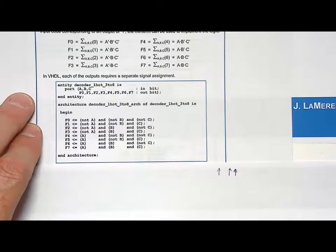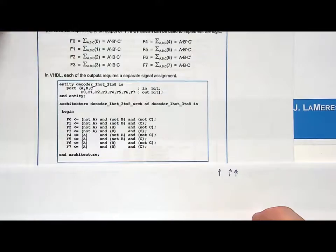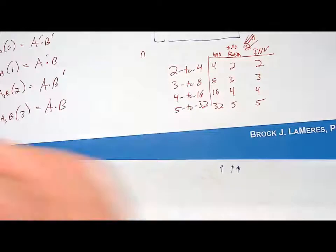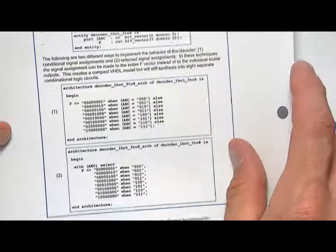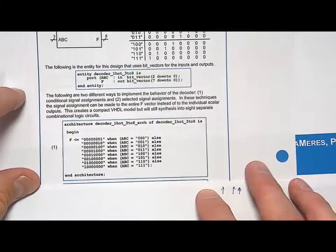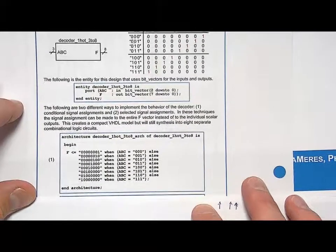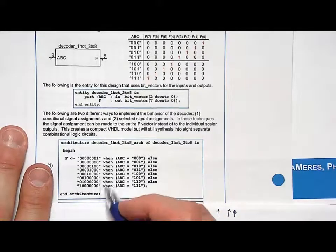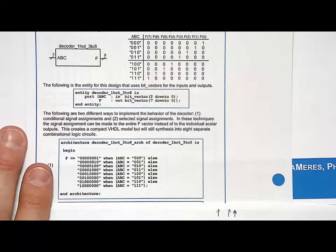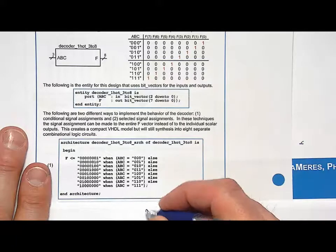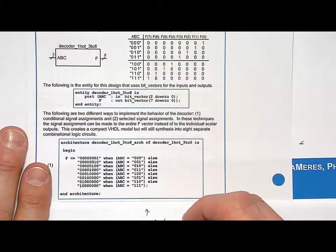Now the power of VHDL is not shown in a concurrent signal assignment. It really is shown when you look at the conditional signal assignments and selected signal assignments. So let's take a look at that exact same example where we're implementing this one hot decoder. But this time I'm going to implement it with a conditional signal assignment. So this is now going to be an example of a conditional signal assignment. So right here is, this is conditional. And this is a conditional signal assignment.